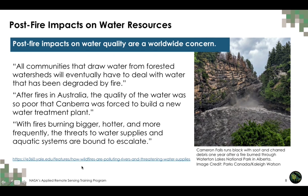Post-fire impact on water quality is a concern for communities worldwide where water is drawn from forested watersheds. After fires in Australia, water quality got so poor that the city of Canberra was forced to build a new water treatment plant. As climate change makes fires more frequent and intense, there will be increased threats to water supplies and aquatic systems. Cameron Falls in Alberta, Canada turned black with soot and charred debris following a fire event that occurred almost one year before the debris started flowing in.